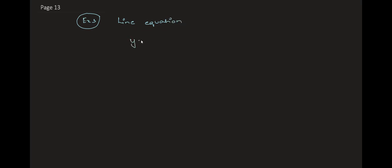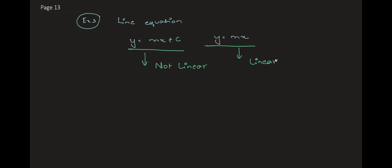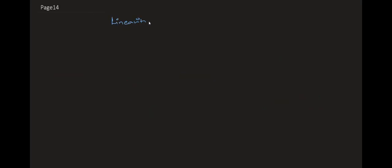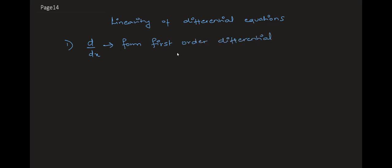Another important example is the line equation y = mx + c. From the zero input zero output condition, y = mx + c is not linear because when input is zero, output equals c, not zero. Whereas y = mx is linear. This is why in many places we use y = mx and not the full y = mx + c. This is a question that has been asked in interviews. Next, we are going to see linearity in the context of differential equations, which are used a lot to model control systems.